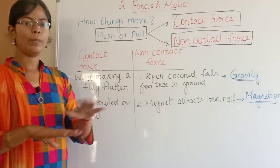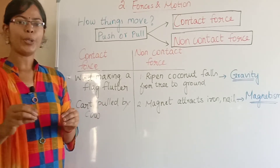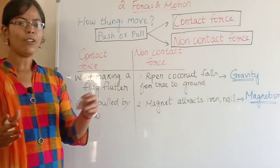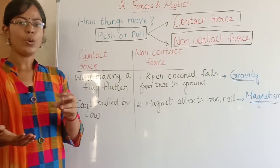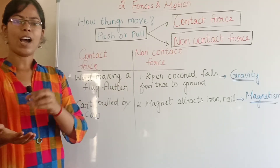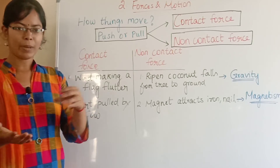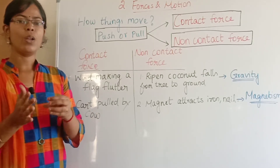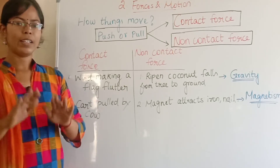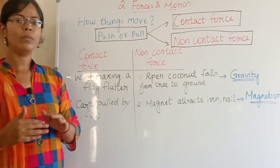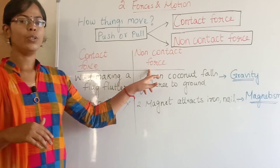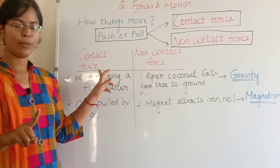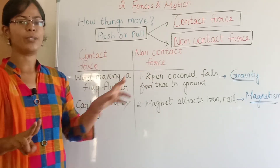Another example of non-contact force: a plate has an iron object with magnetic property. A magnet near the iron attracts it — this movement is caused by a non-contact force. So we have two types of force: contact force and non-contact force.